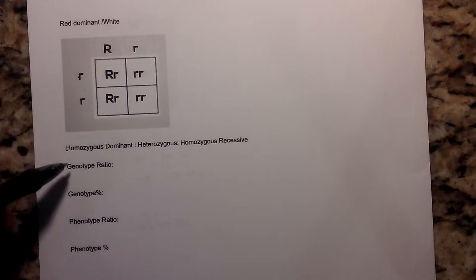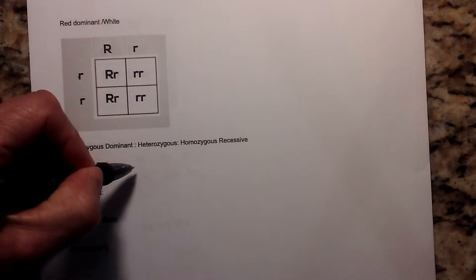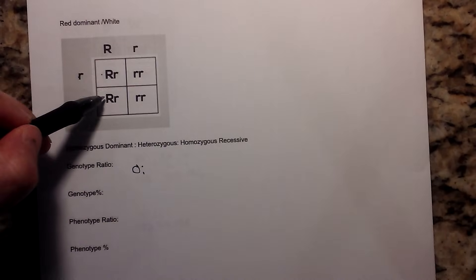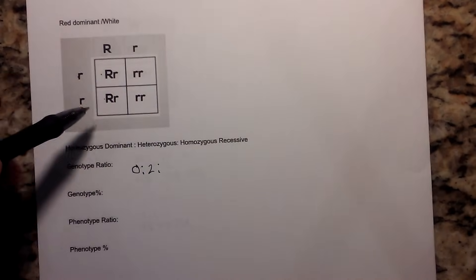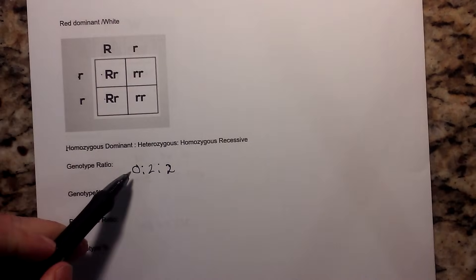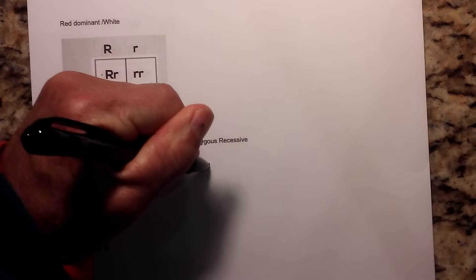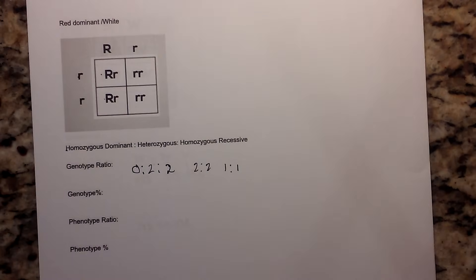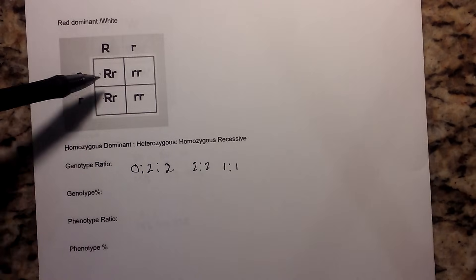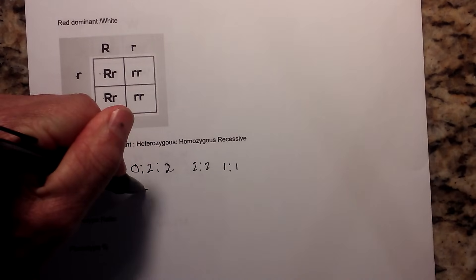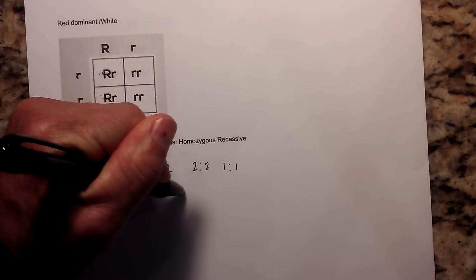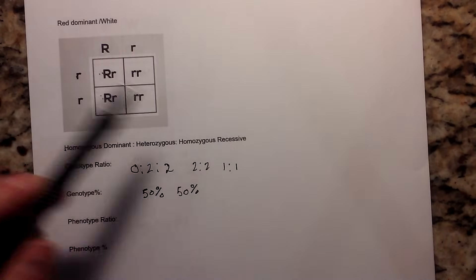First, let's look for homozygous dominant for our genotype. Remember, genotype is your code, and there is 0. For heterozygous, we have 1, 2. And for homozygous recessive, we have 1, 2. Now, if you would like, you can drop the 0, and that would be 2 to 2, or 1 to 1. Now, if we want to convert that to a percentage, that would be 1, 2, or 50% would be heterozygous, and 50% would be homozygous recessive.